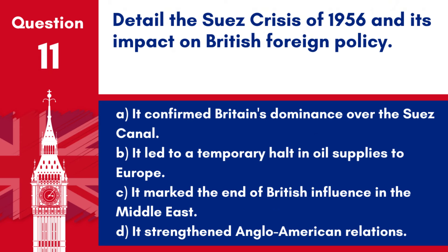Question 11. Detail the Suez Crisis of 1956 and its impact on British foreign policy. a. It confirmed Britain's dominance over the Suez Canal. b. It led to a temporary halt in oil supplies to Europe. c. It marked the end of British influence in the Middle East. d. It strengthened Anglo-American relations. Answer: c. The Suez Crisis marked the end of British influence in the Middle East, illustrating the limits of British power post-World War II, leading to a revaluation of foreign policy.